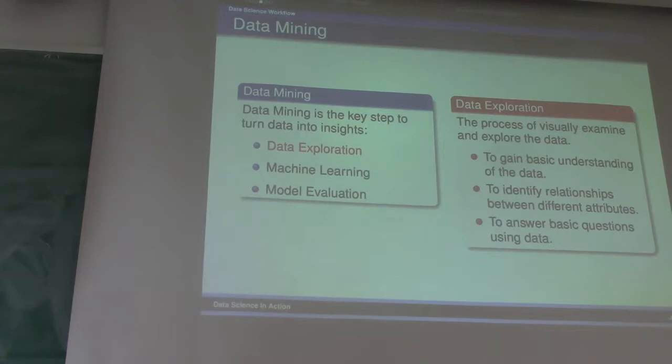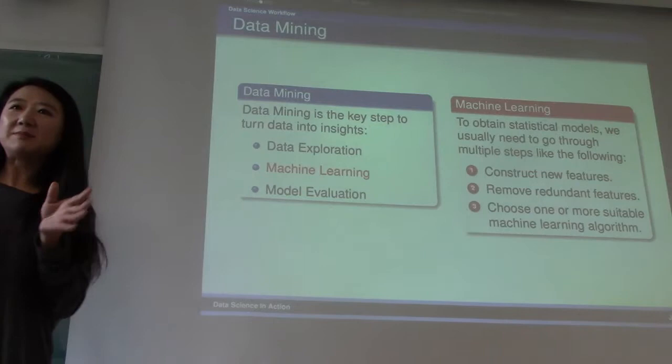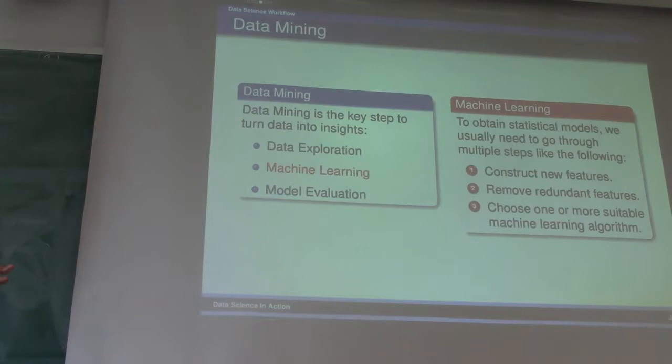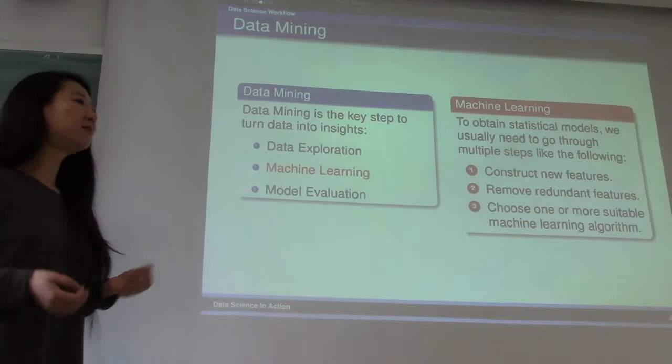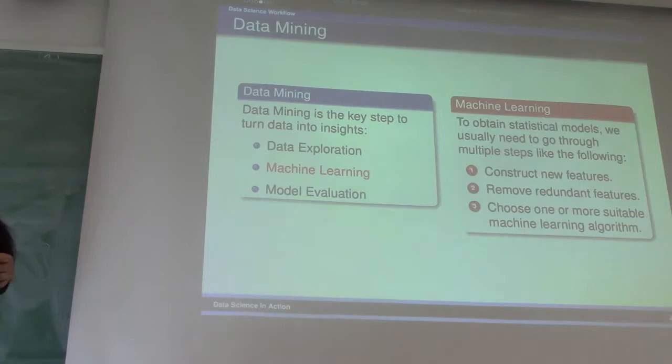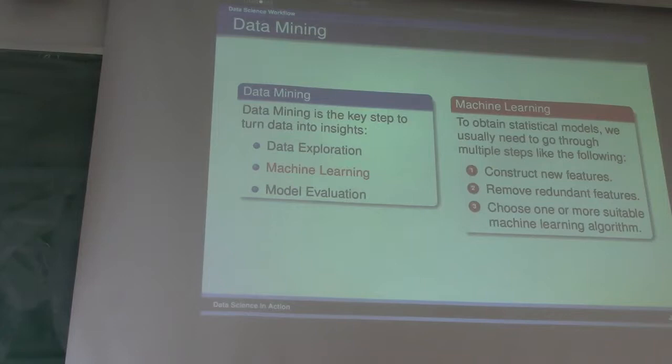Oftentimes when people talk about data science, they think of machine learning. Yeah, machine learning is part of data mining. It's not all, but it is an important part. When you visually examine data, you're using your human eyes. Sometimes the pattern may be hidden, hard for human eyes to identify immediately. You use machine, use algorithms to identify the pattern for you. Machine learning usually means you want to construct features and reduce features that are necessary, and choose the right algorithm. Sometimes it means tuning the parameter in the way that fits your data.